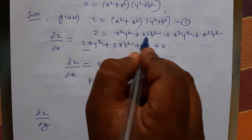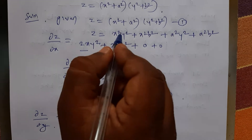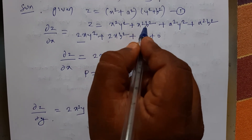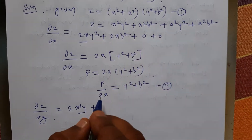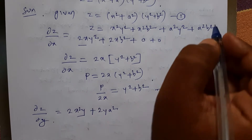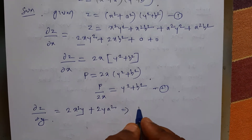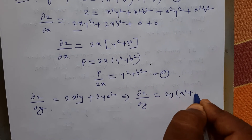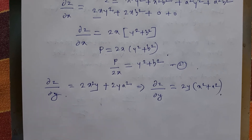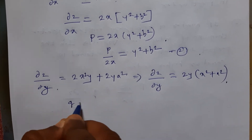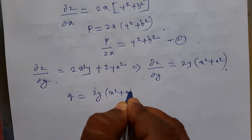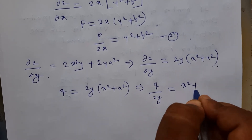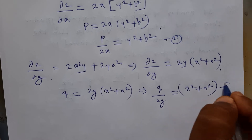Similarly, differentiating equation number 1 partially with respect to y: the derivative of the first term is 2x²y, the second term gives 0 (x and b constant), and the third term gives 2ya². So dou z/dou y = 2y(x² + a²). Therefore q = 2y(x² + a²), which gives q/(2y) = x² + a². I denote this as equation number 3.